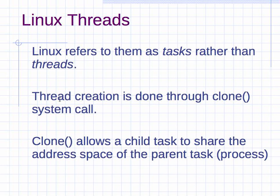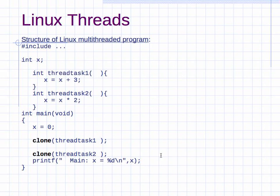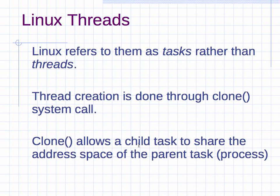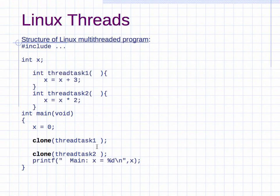Thread creation is done through the clone system call. The name clone is not ideal — if you ask me, the fork function call should have been called clone and the clone function call should have been called fork; I think they should have switched them. But this is what we ended up with. What clone does is it allows a child task to share the process address space of the parent's process, unlike the fork system call. Fork starts up a child but makes a complete copy of the parent task, and the child executes on that copy. That is the basic view for now.